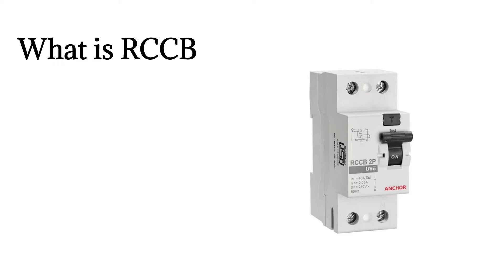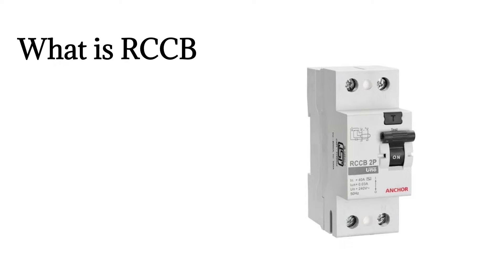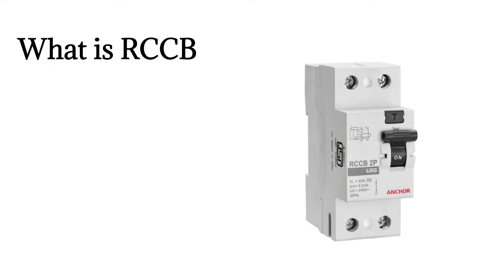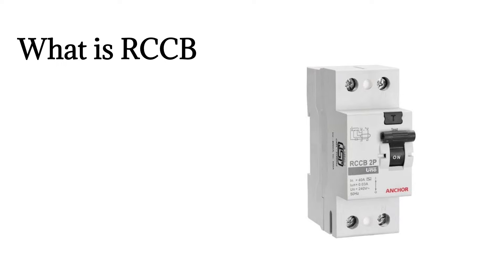RCCB stands for Residual Current Circuit Breaker. This residual current device is an electrical wiring device that disconnects the circuit whenever there is leakage of current flowing through the human body, or when the current is not balanced between the phase and neutral conductors. It is the safest device to detect and trip against electrical leakage currents, thus ensuring protection against electric shock caused by direct contacts. RCCB is generally used in series with an MCB, which protects against overcurrent and short circuit current. Both phase and neutral wires are connected through the RCCB device.